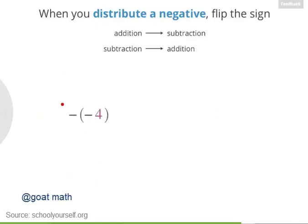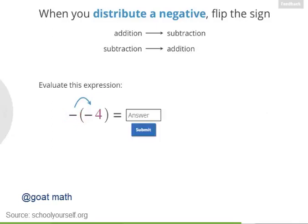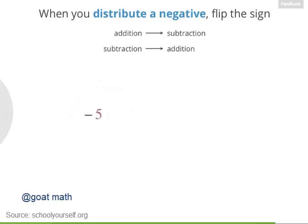Let's look at this expression: negative negative 4. Keep in mind that having a minus sign is the same as multiplying by negative 1. So you can distribute this minus sign onto the negative 4. This equals positive 4. So the negative of a negative is a positive, just like multiplying two negatives together gives you a positive.